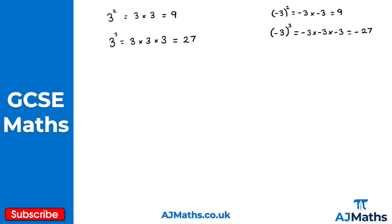Now let's take a look at roots. We denote a root with this symbol — for example, the square root of 16. There is actually a little two with the square root, though we don't write it as it's implied. This tells us we're taking the second root, or the square root of 16. We're asking: what number times by itself gives 16? That must be 4.